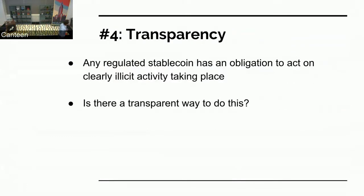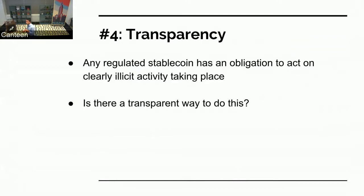Number four is transparency. Regulated stablecoins have an obligation to deal with illicit activity because they're regulated. The New York Department of Financial Services basically considers this as much a dollar as a physical dollar in your hand. The obligation of someone issuing a regulated stablecoin has the same obligation that a bank would have — a bank wouldn't take in clearly laundered money. So how do you implement that kind of security and regulation to a smart contract in a transparent way so everyone understands what's happening?